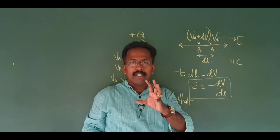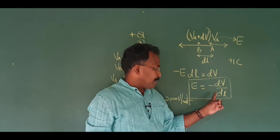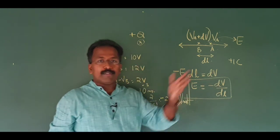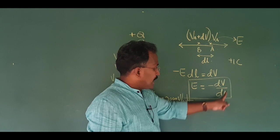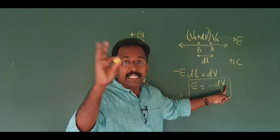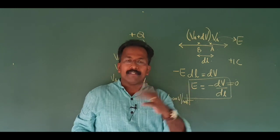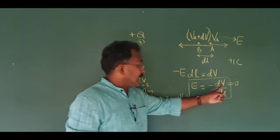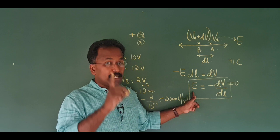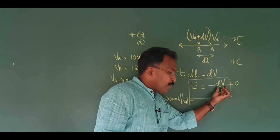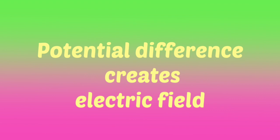Every mathematical equation should be understood carefully. E is equal to minus dV by dL. What is the meaning? If the potential difference dV is equal to zero, what happens? The electric field will be zero. What is the meaning? Potential difference is zero, electric field is also zero. Potential difference creates electric field.